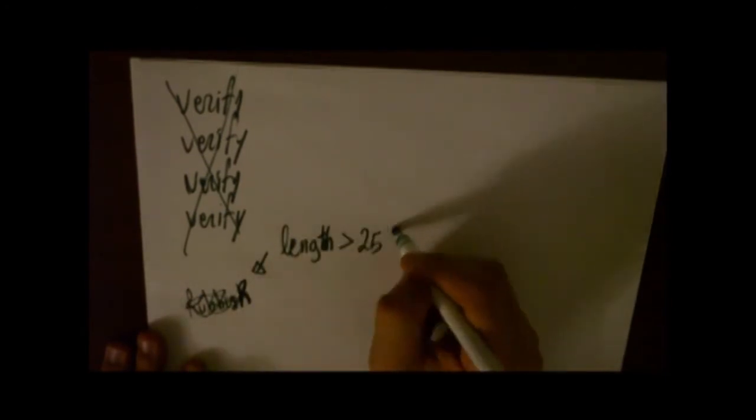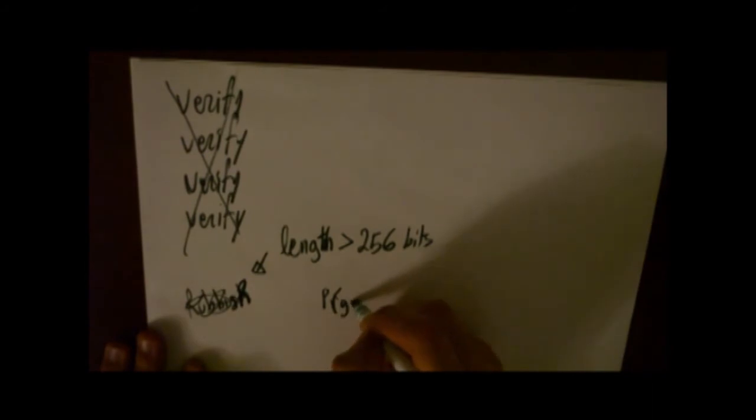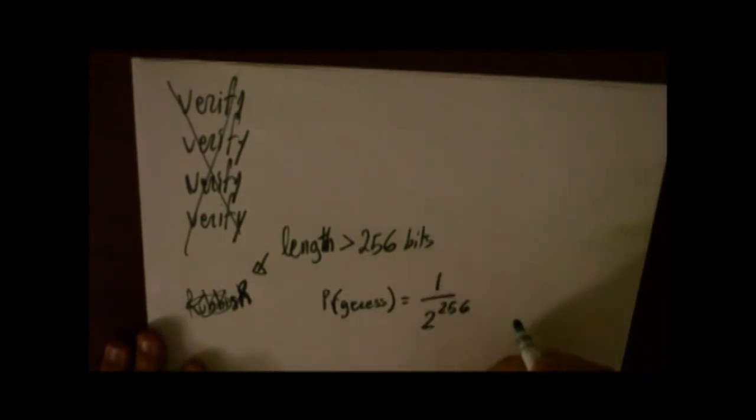Now, you might say, you can use that to decrypt the message by calling this function repeatedly. But that's never going to happen since we usually use 256 bits long, at least, messages. Which means that your chance of guessing correctly is 1 over 2 to the power of 256.